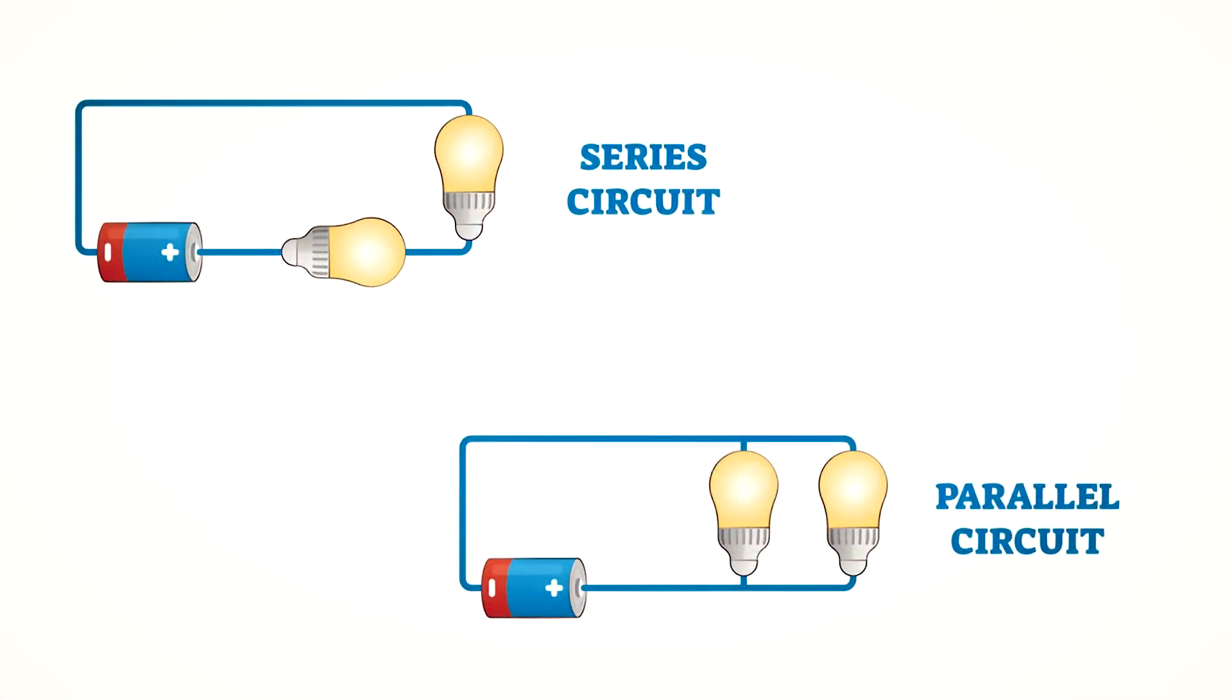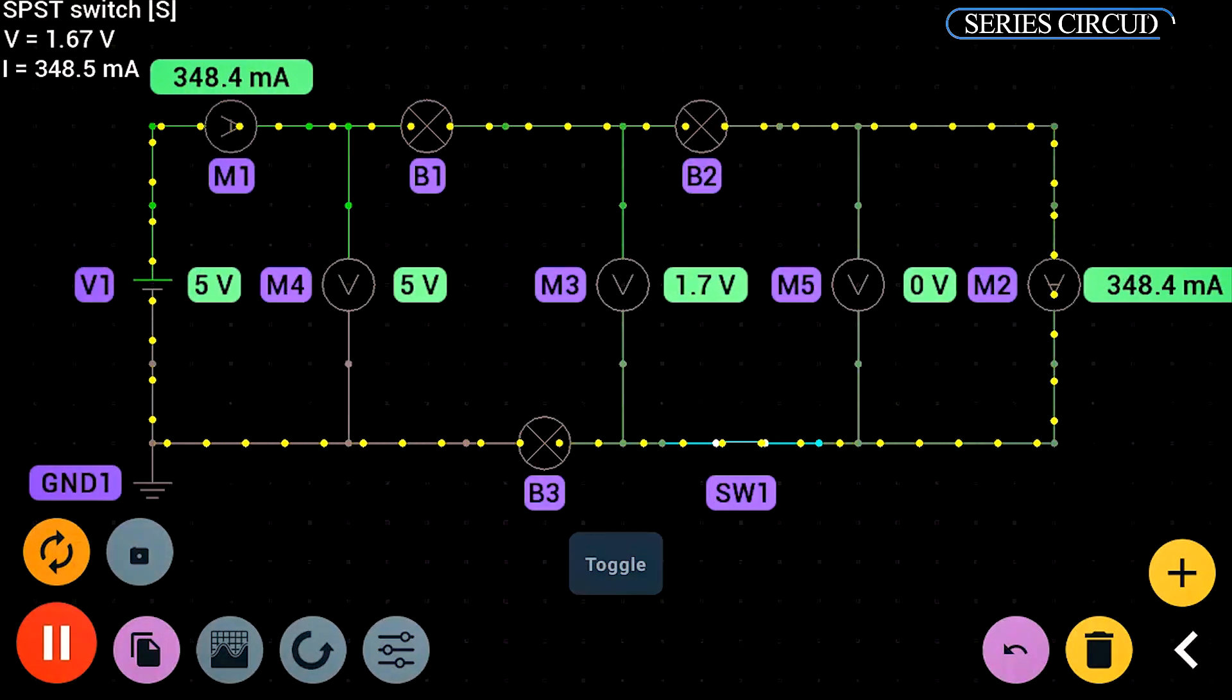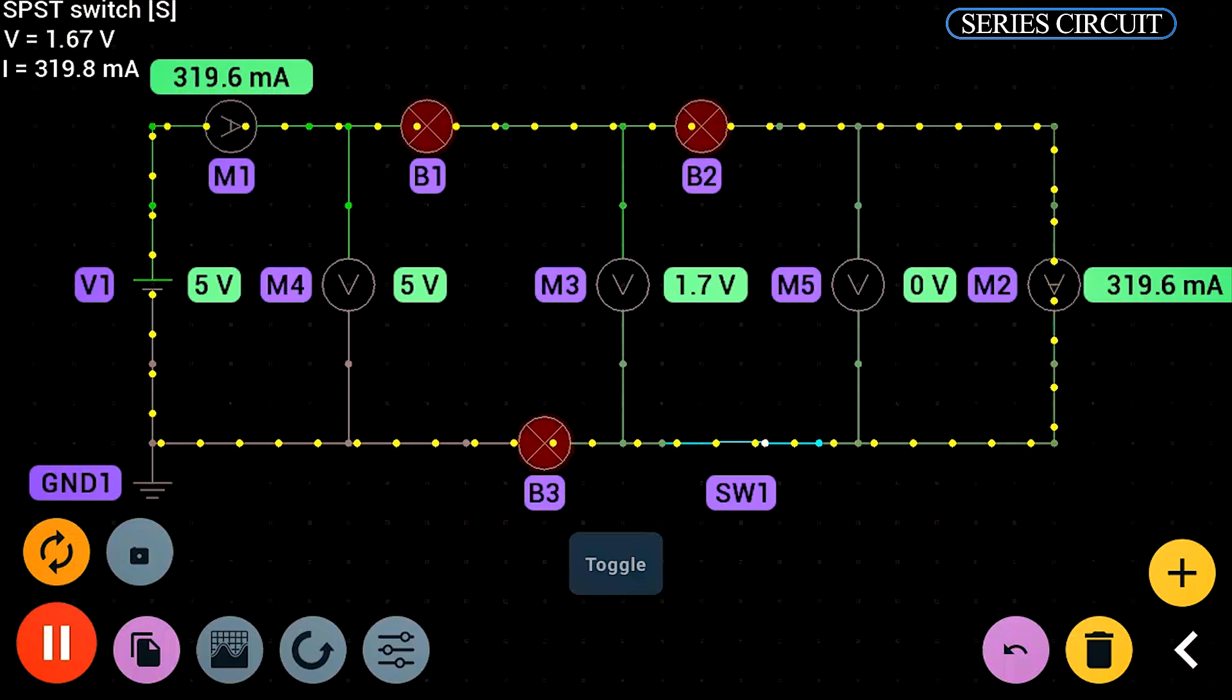Now, let's see how this loop can be connected in two main ways. In a series circuit, components are connected one after another, like links in a chain. Electricity flows through every component in order. Voltage is split across each component, and the current stays the same throughout.